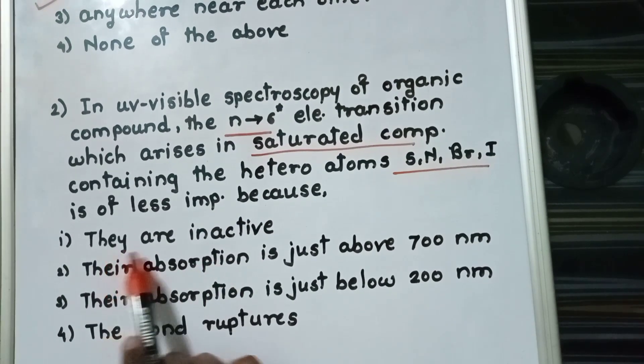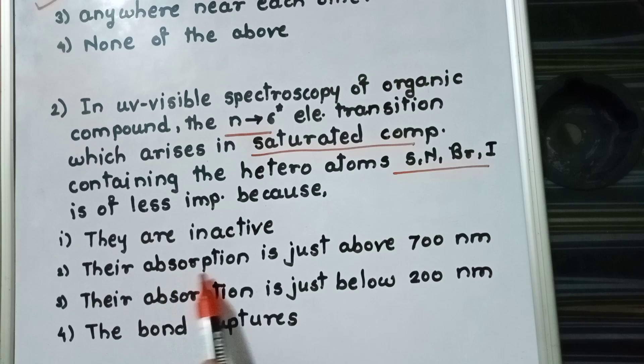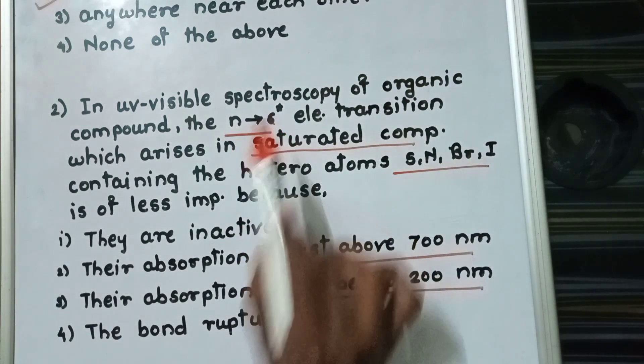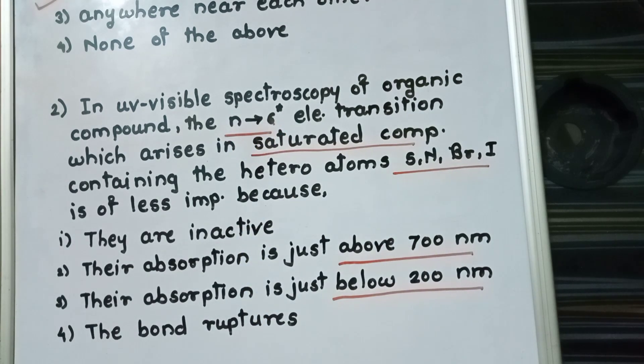Options are they are inactive, their absorption is just above 700 nanometer, their absorption is just below 200 nanometer, and bond rupture. We know that n to sigma star transitions are high energy transitions, and the correct option is their absorption is just below 200 nanometer.